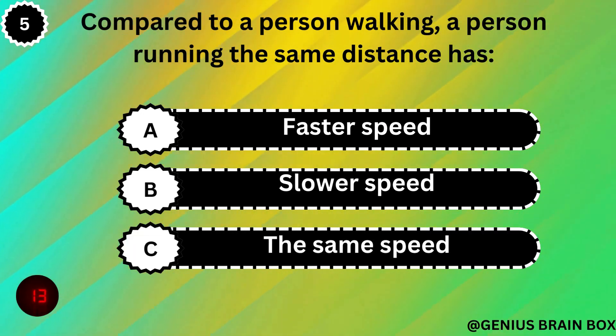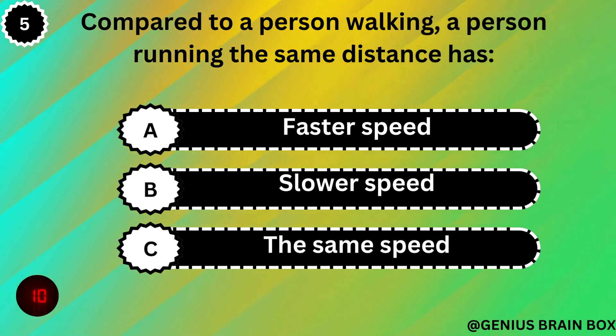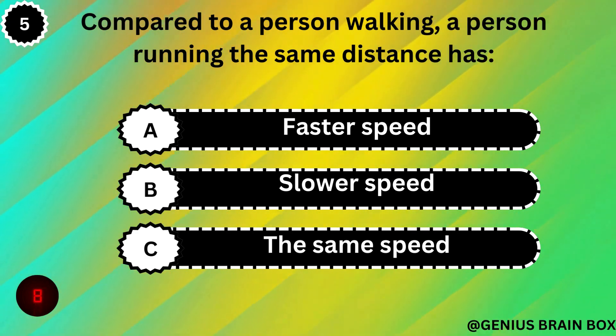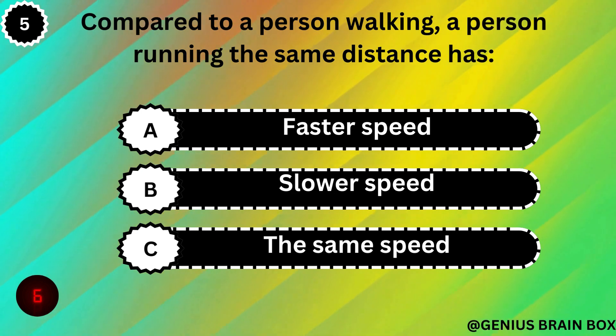Compared to a person walking, a person running the same distance has: faster speed, slower speed, or the same speed.